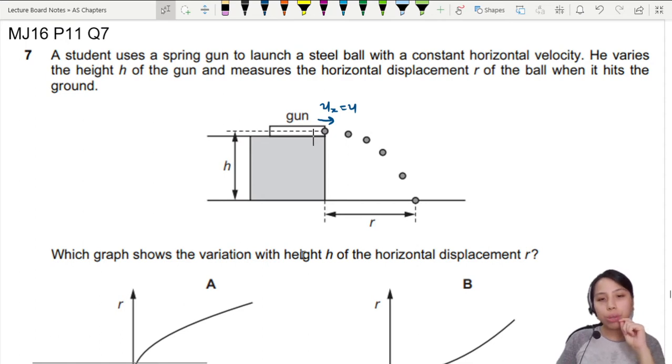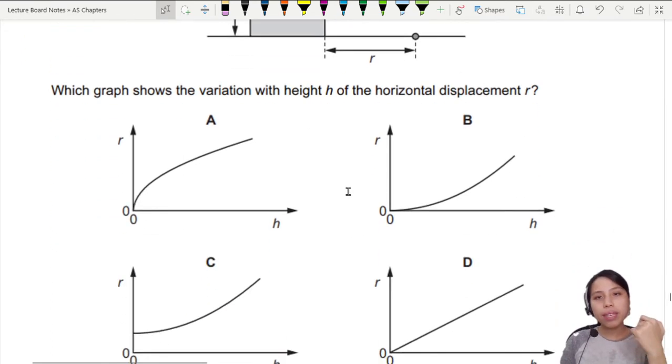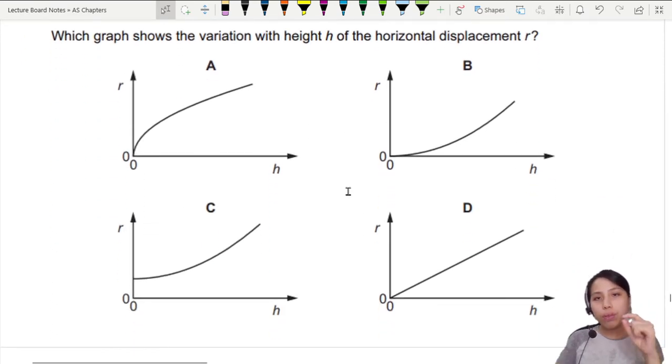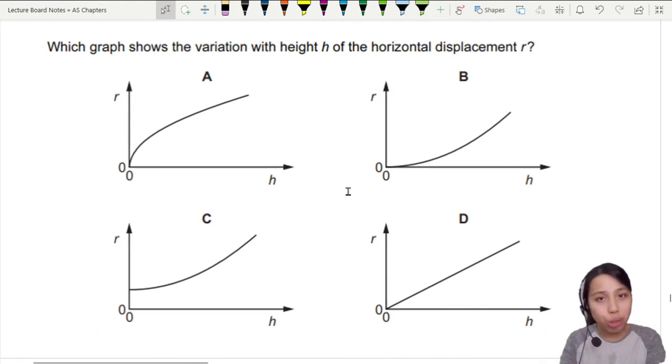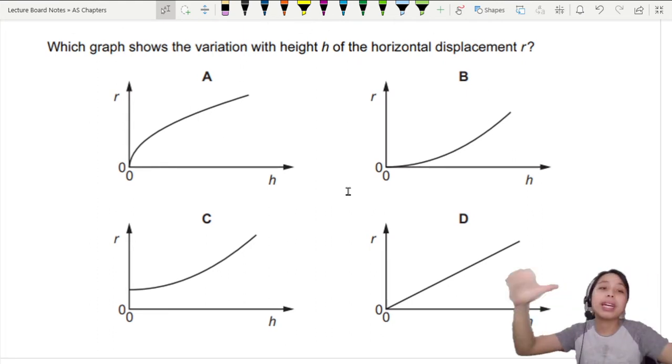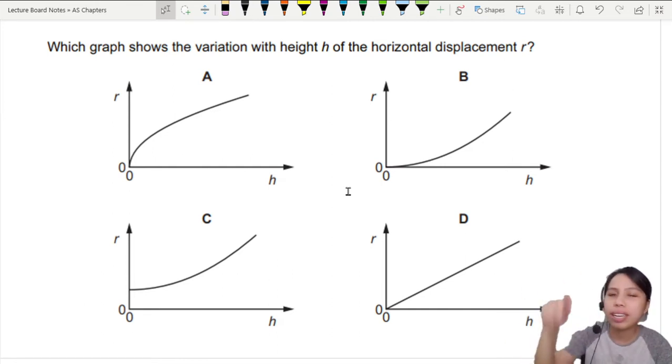Which graph shows the variation with height of the horizontal displacement? So I change this height, this R will also change. But what is the relationship? If you have not tried this question before, I encourage you please pause the video now and try out this question. Just try and make a guess: A, B, C, D.